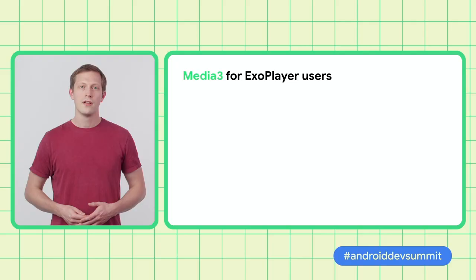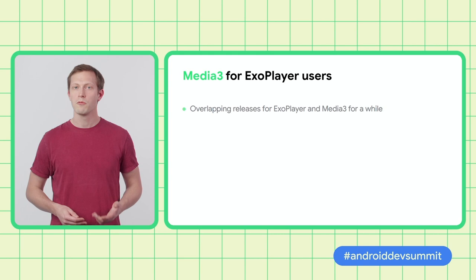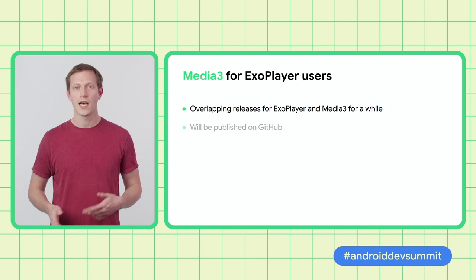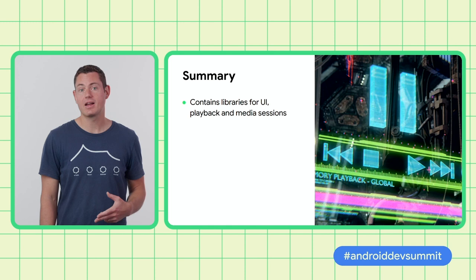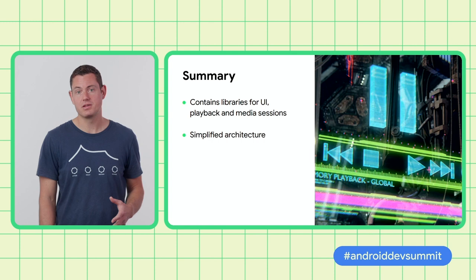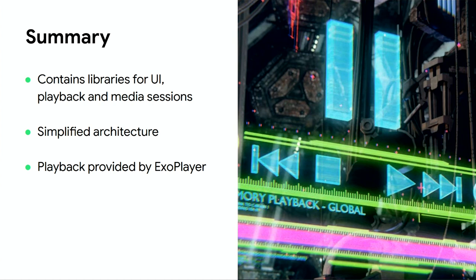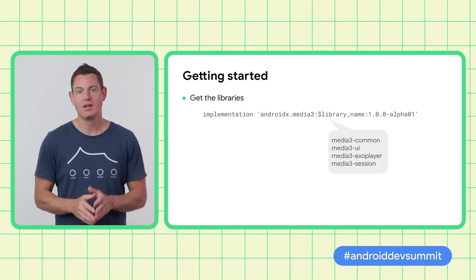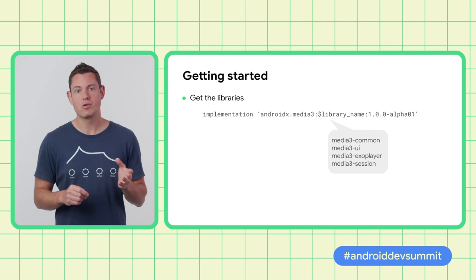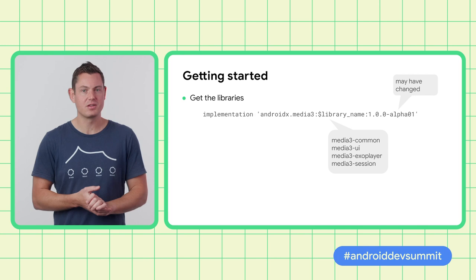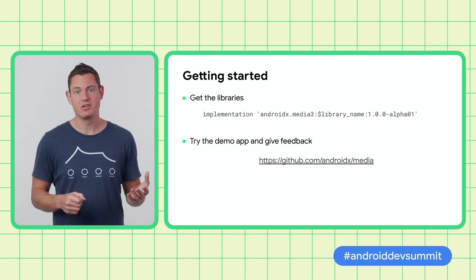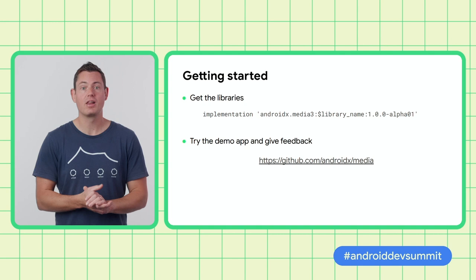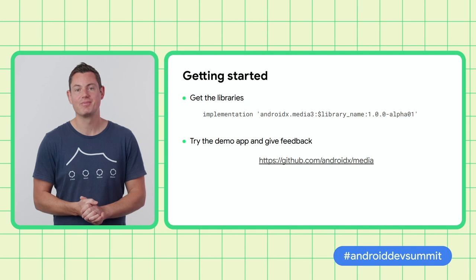If you're a current ExoPlayer user, we want to minimize disruption for the migration to Media 3. We plan to provide at least one quarterly release where both ExoPlayer and Media 3 are available, and we're going to continue to publish to GitHub just like ExoPlayer. Just to summarize: Media 3 is the new home for all media support libraries, containing libraries for UI, playback, and handling media sessions. It allows a simplified architecture for common use cases as well as sensible default behavior. It's the new home for ExoPlayer, which provides all the underlying playback capabilities, and now has a subset of its API marked as stable, making upgrades easier. To get started with Media 3, you can add the libraries to your app using the provided artifact ID. There's a demo app which shows many of the concepts from this talk, so please give that a try. Media 3 is in alpha, which means the API can change, and we'd love to hear your feedback. If you have suggestions or find any bugs, please file an issue on GitHub. We're really looking forward to seeing what you can build with this new set of libraries. Thank you very much.